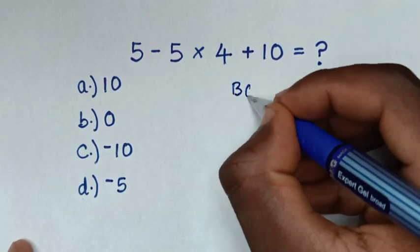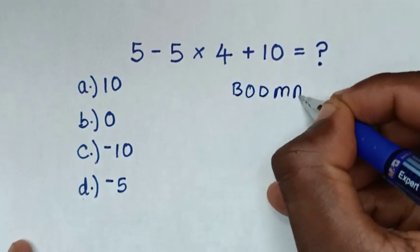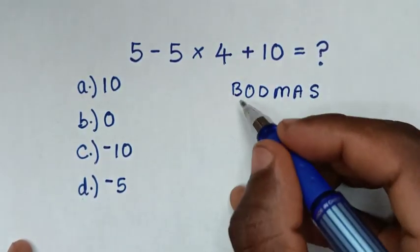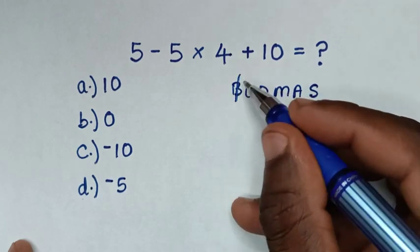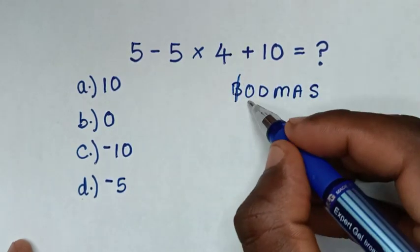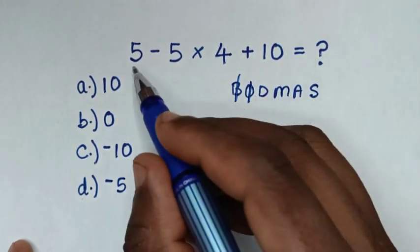So, from the rule, which is BODMAS, whereas B is bracket, we don't have bracket in this problem. Also, we don't have order or exponents in this problem.